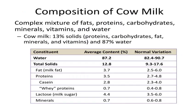Here we again see the composition of cow milk, but this time as a range rather than a population average. In general, around 13 percent solids and 87 to 88 percent water. Water content may range from 82.4 to 90.7 percent, and total solids from 9.3 to 17.6 percent. Fat ranges from 2.5 to 6 percent, protein 2.7 to 4.8 percent, casein 2.3 to 4 percent, whey proteins 0.4 to 0.8 percent, lactose 3.5 to 6 percent, and minerals 0.6 to 0.8 percent.